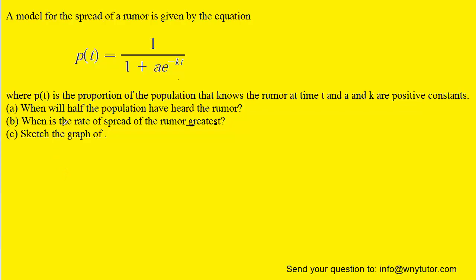For part b of the question, we're being asked to maximize the rate of spread of the rumor. The rate of spread is actually the derivative of the rumor function, so we're going to first have to take the derivative of this equation. Since it's a quotient, we could apply the quotient rule to find its derivative.